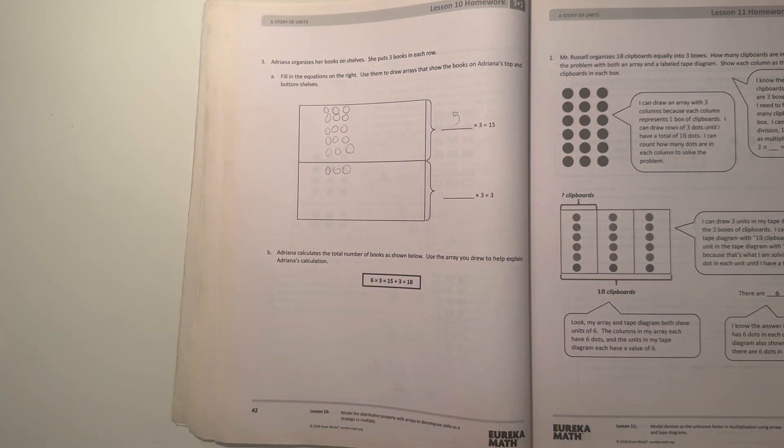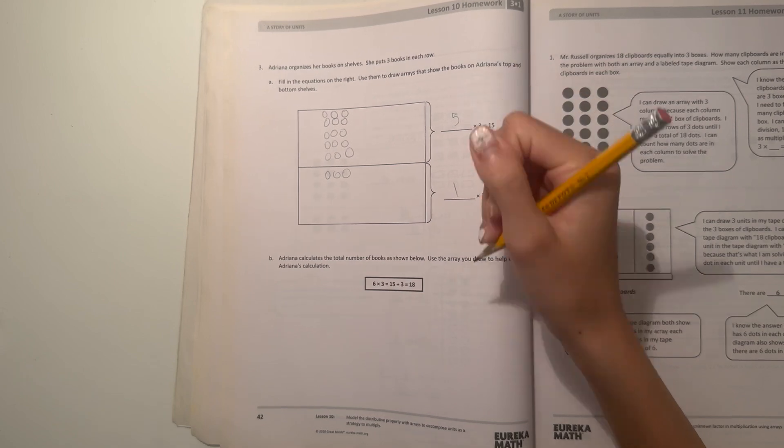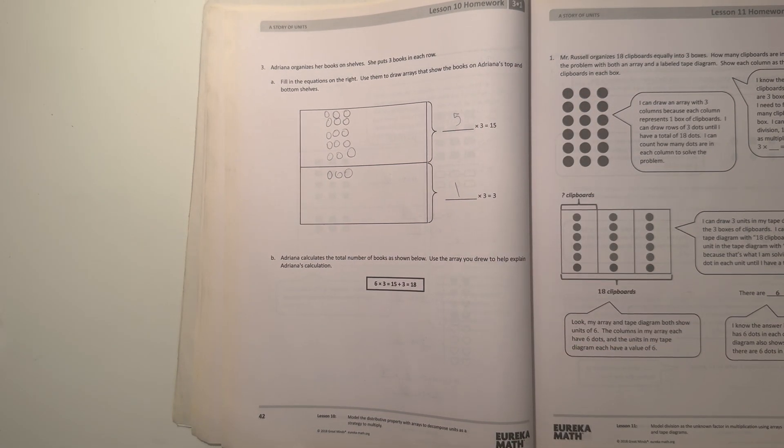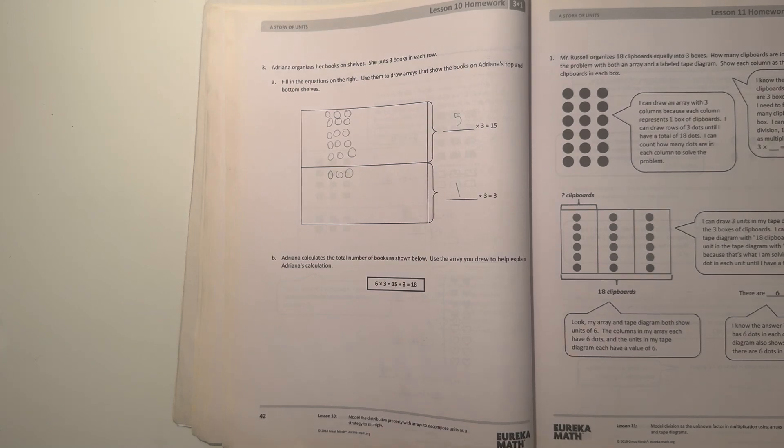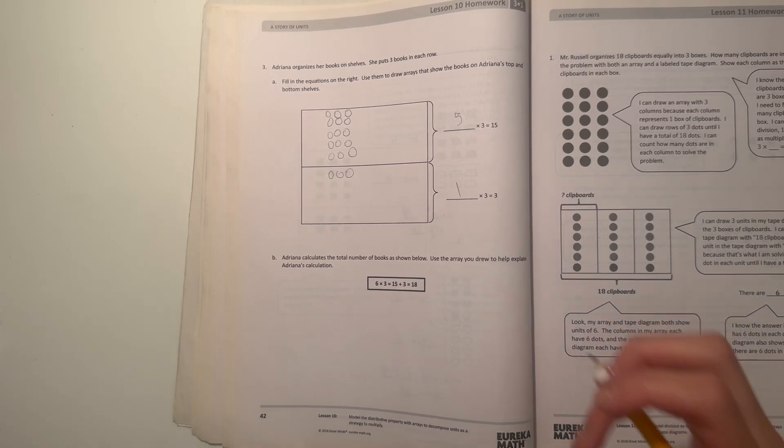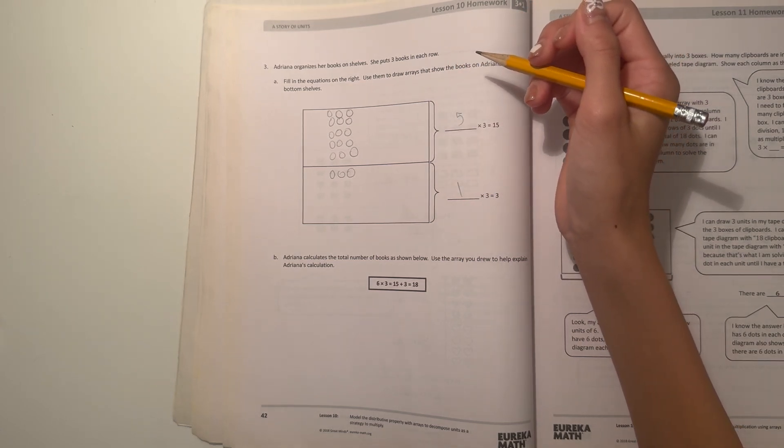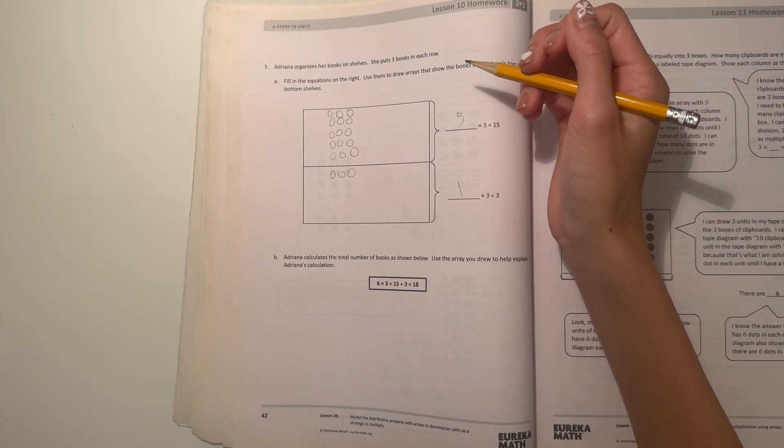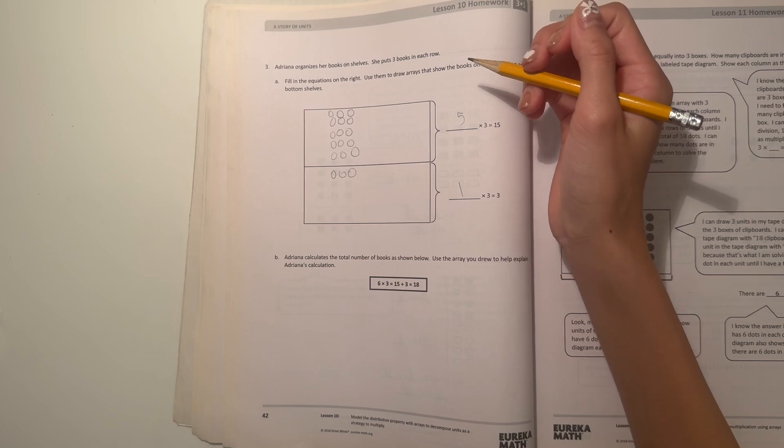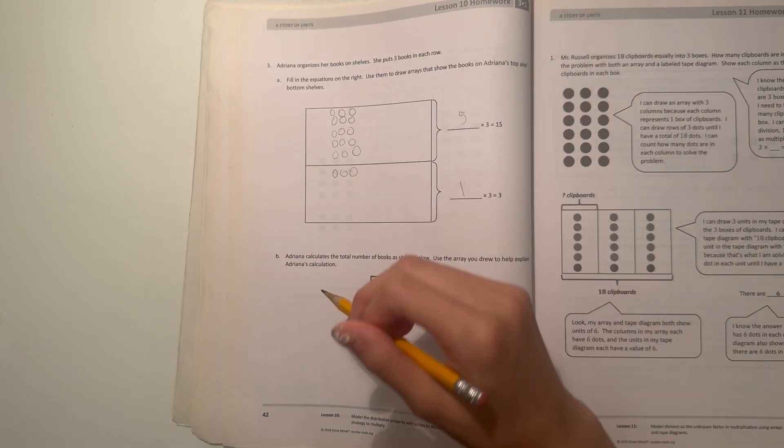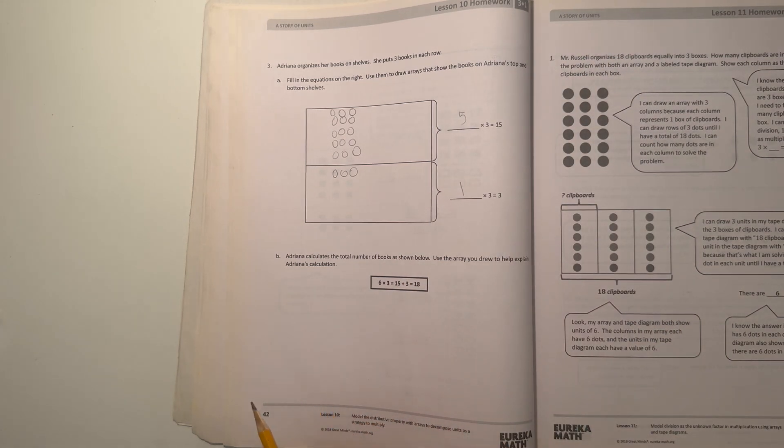Now B says Adriana calculates the total number of books as shown below. Use her array to help explain Adriana's calculation. All right, so she has six times three equals fifteen plus three, which is eighteen. This makes sense because she separated the array into five times three and one times three, where she got fifteen plus three equals eighteen.